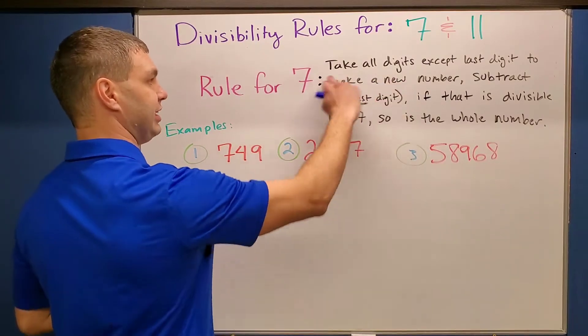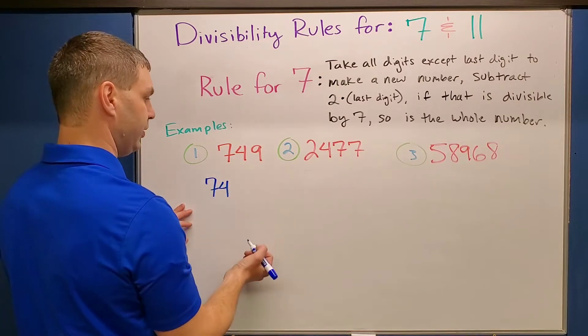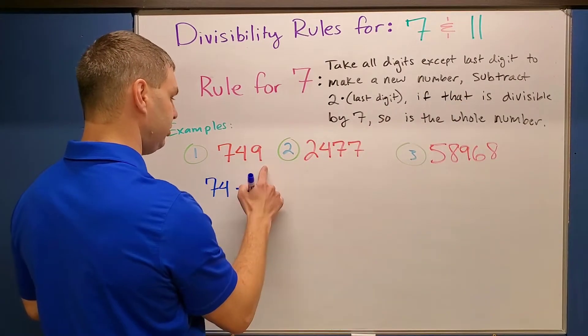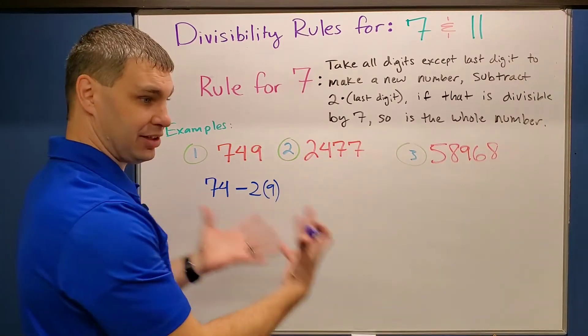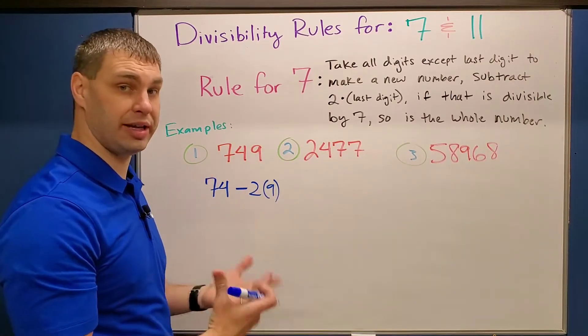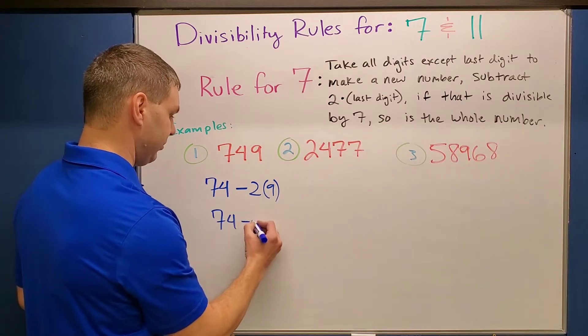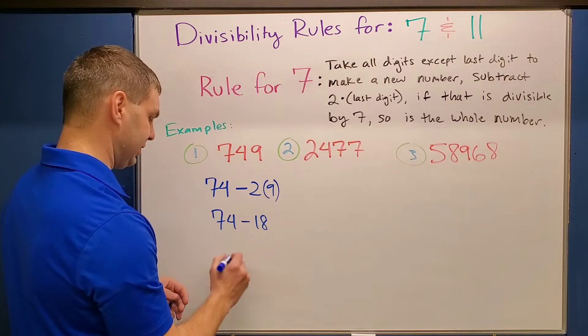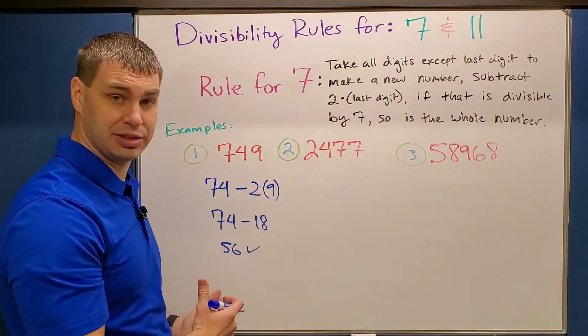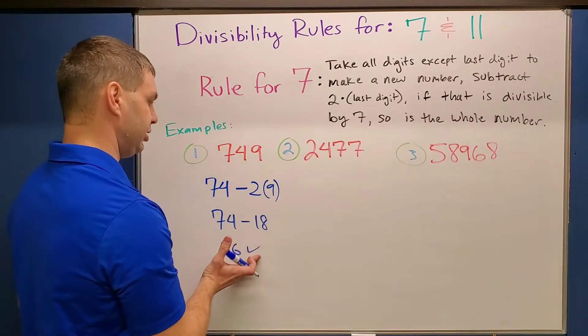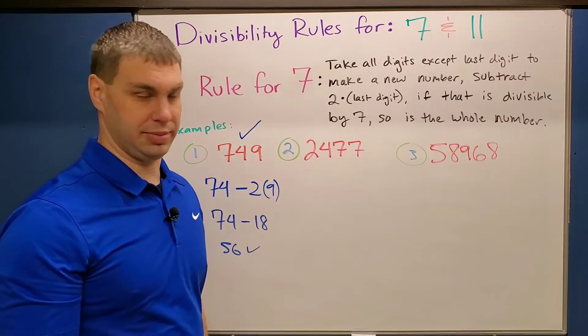So if we look here, if I take all the digits except for my last one, in this case, that'd be just the 7 and the 4. Then I have to subtract 2 times my last digit, so 2 times 9 in this case. And then if I get an answer that is divisible by 7, then the whole thing will be divisible by 7. So in this case, I have 74 minus 18. 74 minus 18 is 56. 56 is divisible by 7. Let's try to get down to something that you know, right? And then once you get that, then you can say yes or no whether the whole thing is divisible by 7.